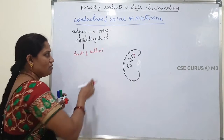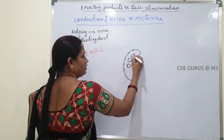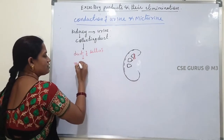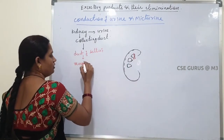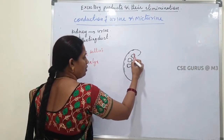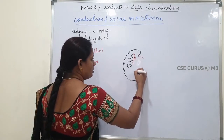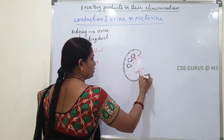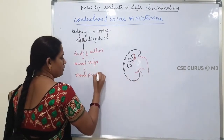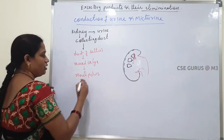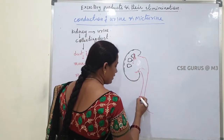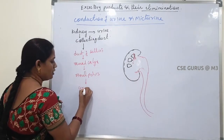The ducts open into the renal calyces. All renal calyces open into a wide portion called the renal pelvis. Then the renal pelvis continues as a tube-like structure called the ureter.